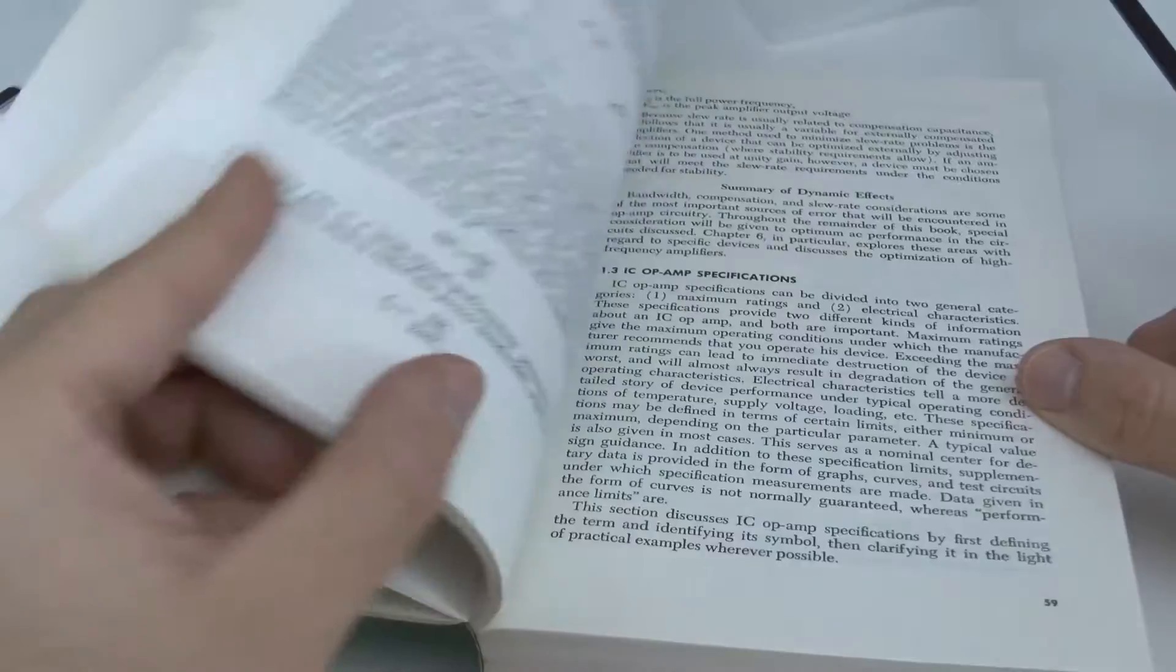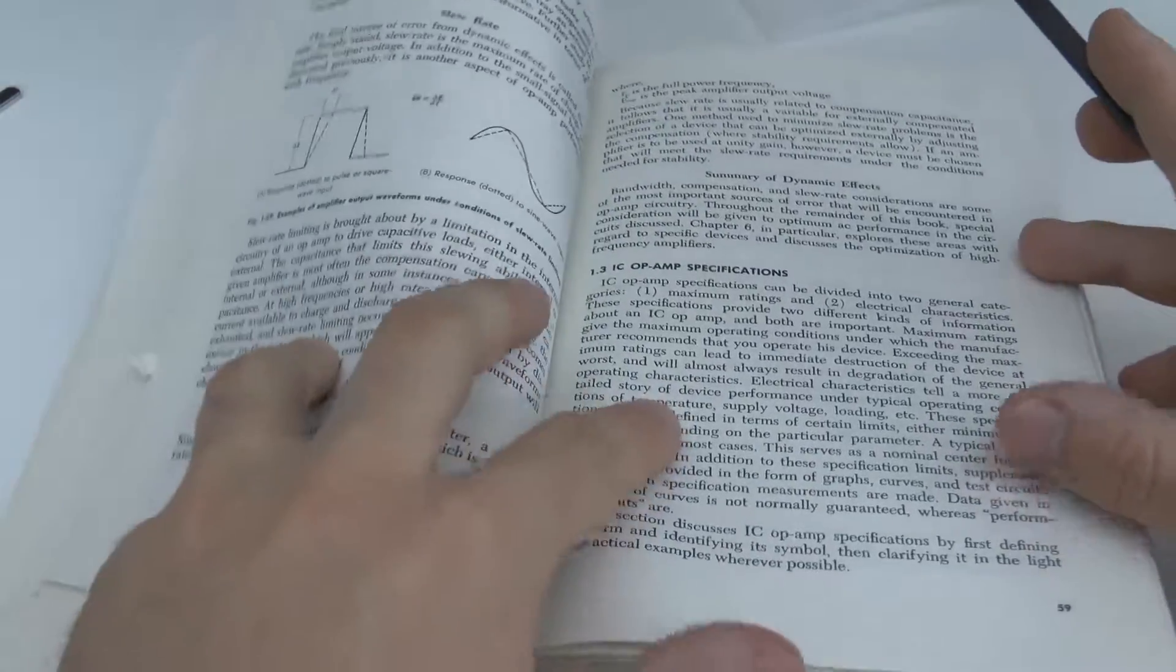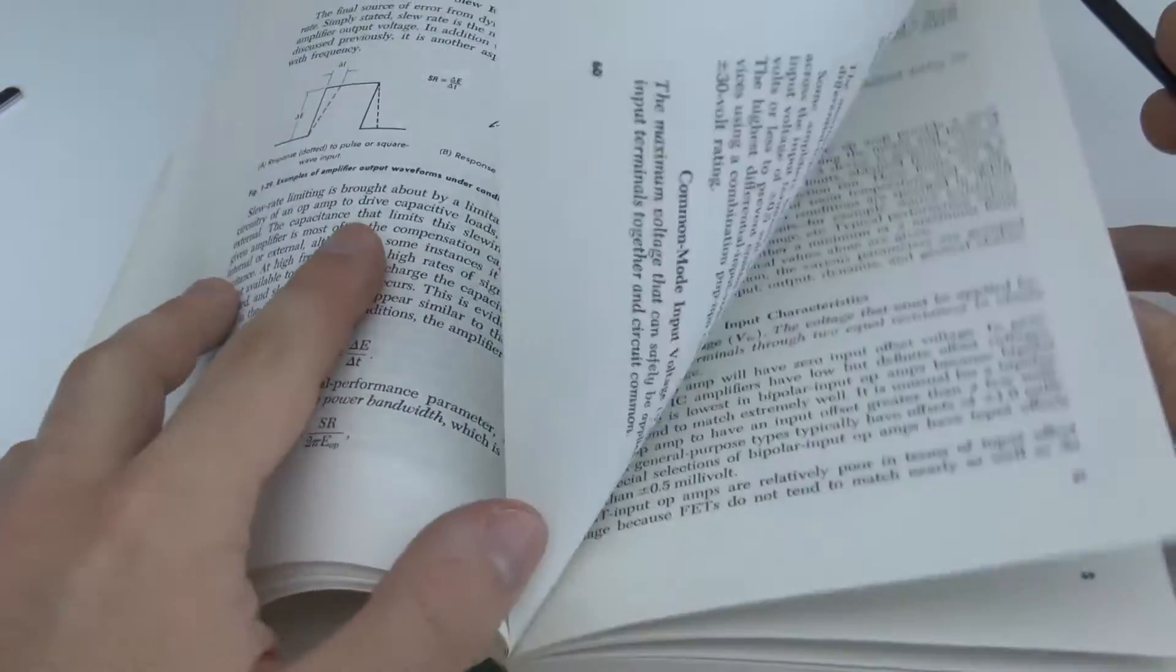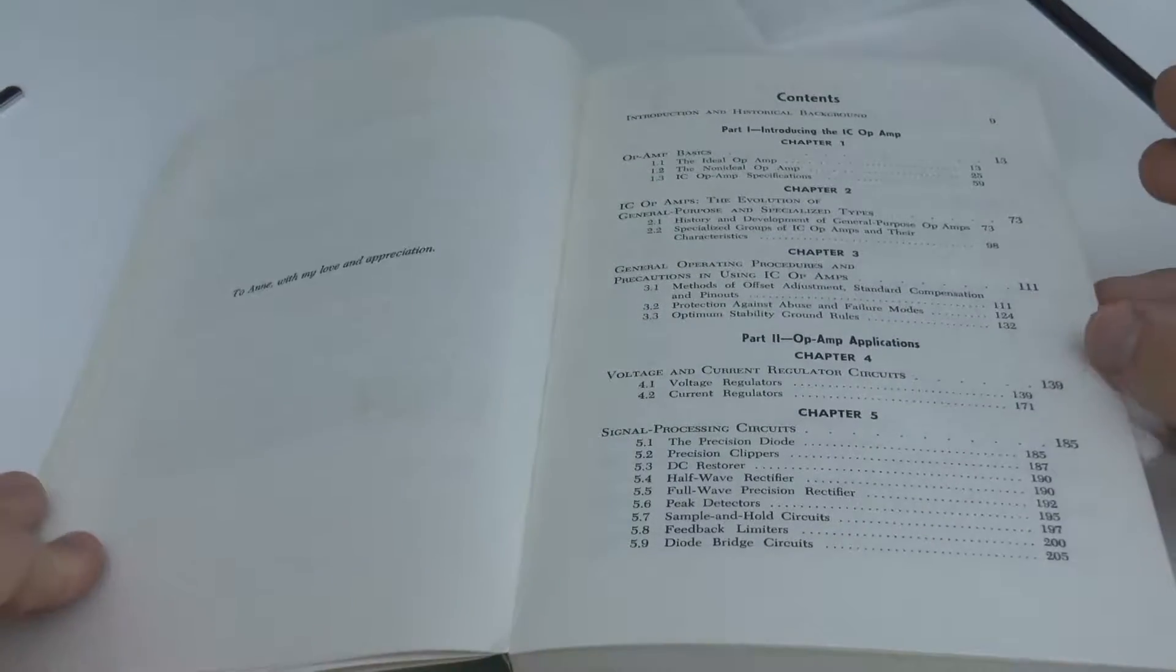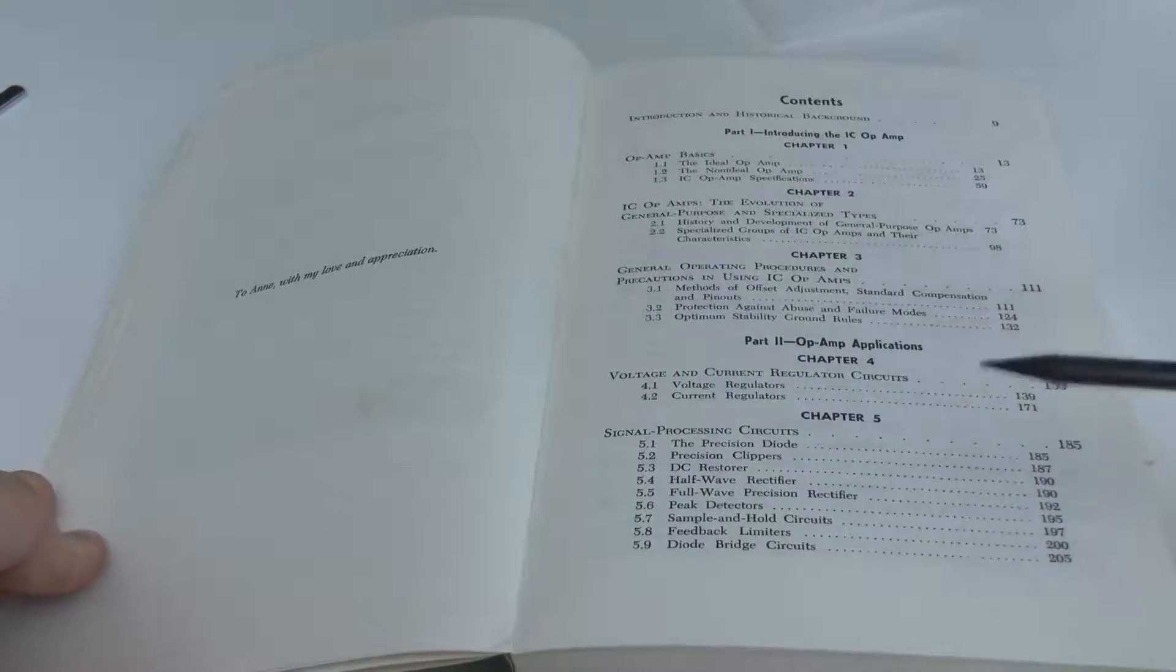Of course, with the book being as old as it is, many more recent pieces don't get discussed. So for example, most of the circuits use the 741 or similar older components. But this is not so much the problem.